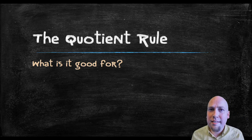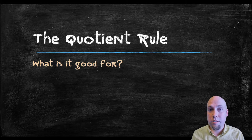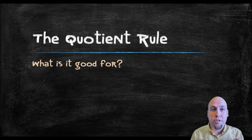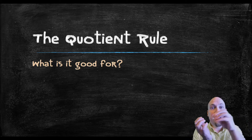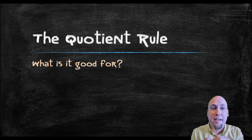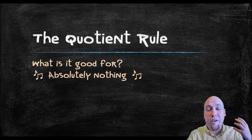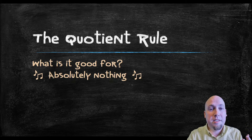The quotient rule is a lot nastier than any of the derivative rules we've seen earlier. It's a lot nastier than the product rule, which told us how to find the derivative of the product of two functions, and it's also a lot nastier than the chain rule, which told us how to find the derivative of the composition of two functions. But fortunately, we're also going to see that we don't actually need the quotient rule — it just follows from other rules that we've already developed.